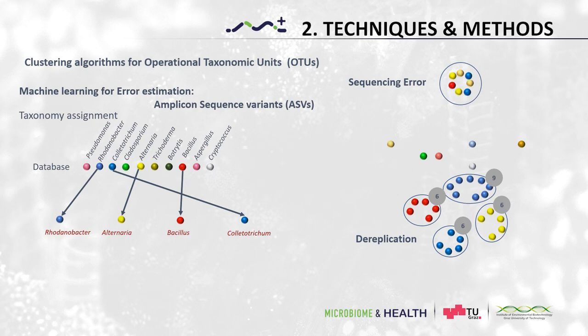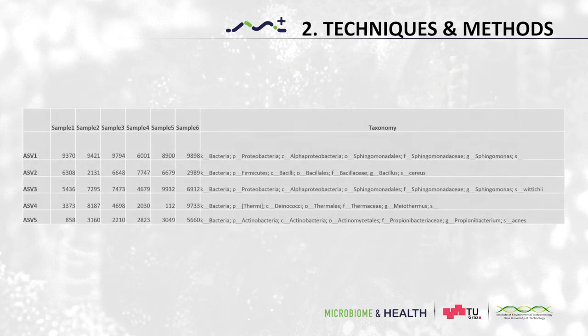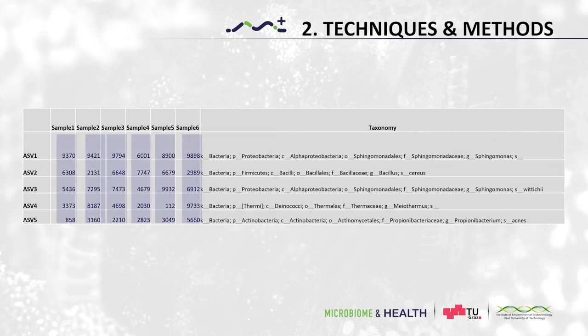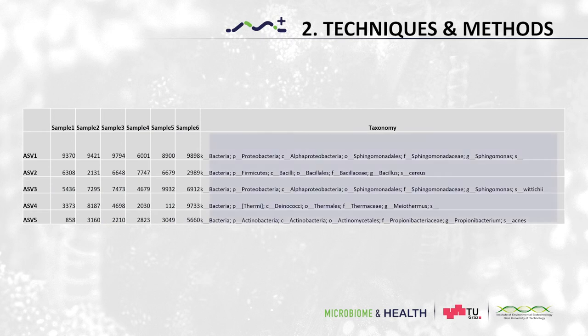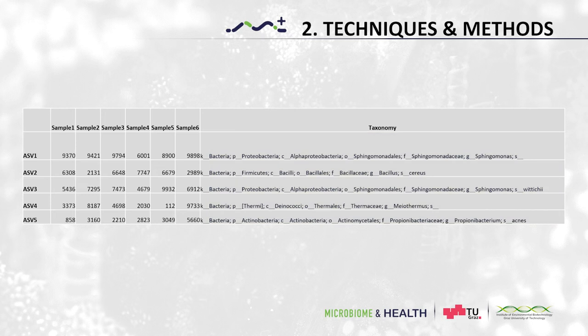Once all OTUs or ASVs are identified, we can record all of this data in the form of a table as shown here. The first column is the name of the OTU or ASV, and the following columns correspond to the abundance of each ASV in each sample, followed by a column with their taxonomy. This information is usually saved in a format called BIOM, or biological observation matrix.